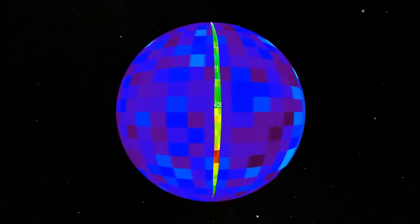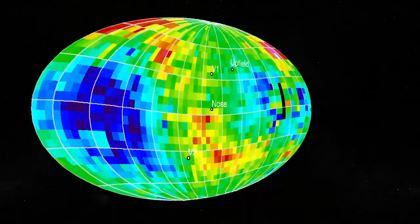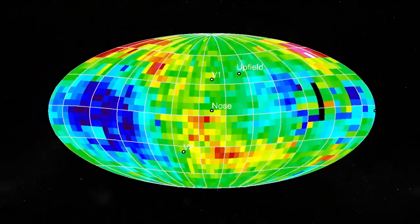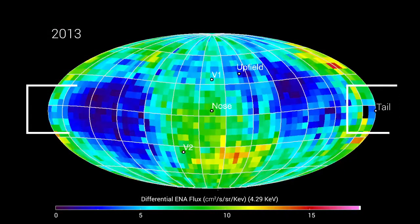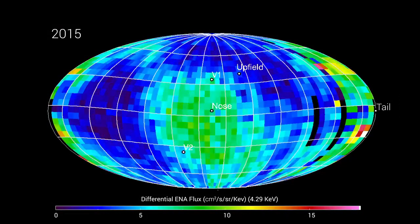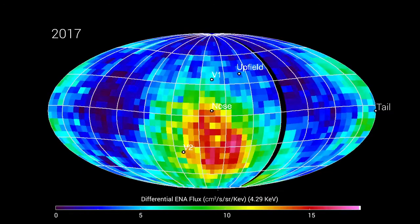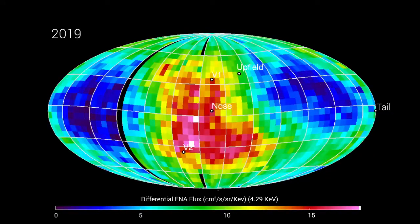If you cut the heliosphere and laid it out onto a flat surface, this is what you would see. This is the nose, and this is the tail. The nose shows high ENA fluxes, which indicate a strong gust of wind and the heliosphere ballooning.